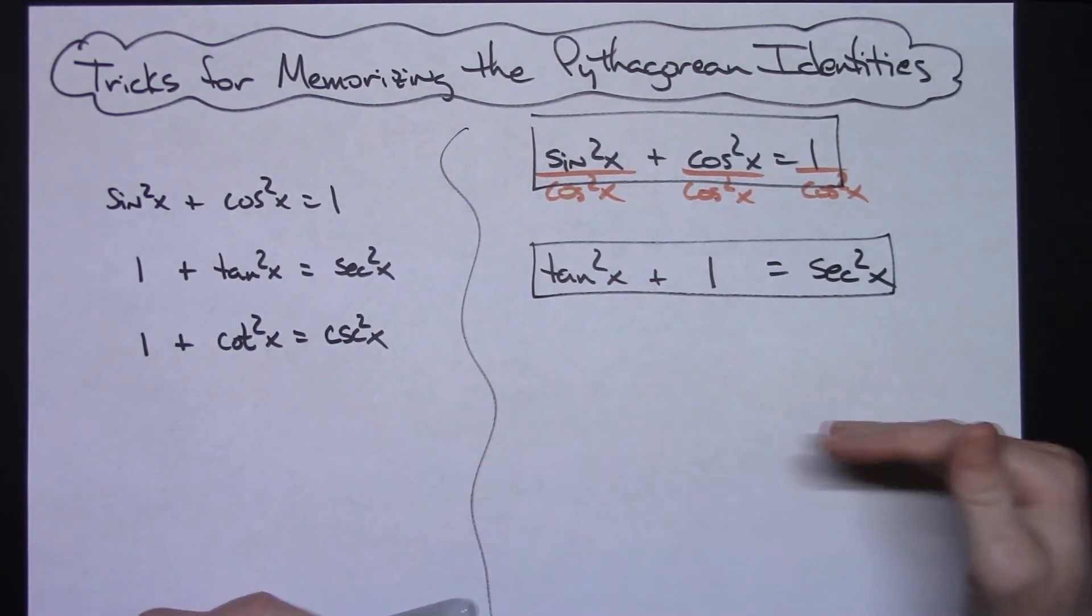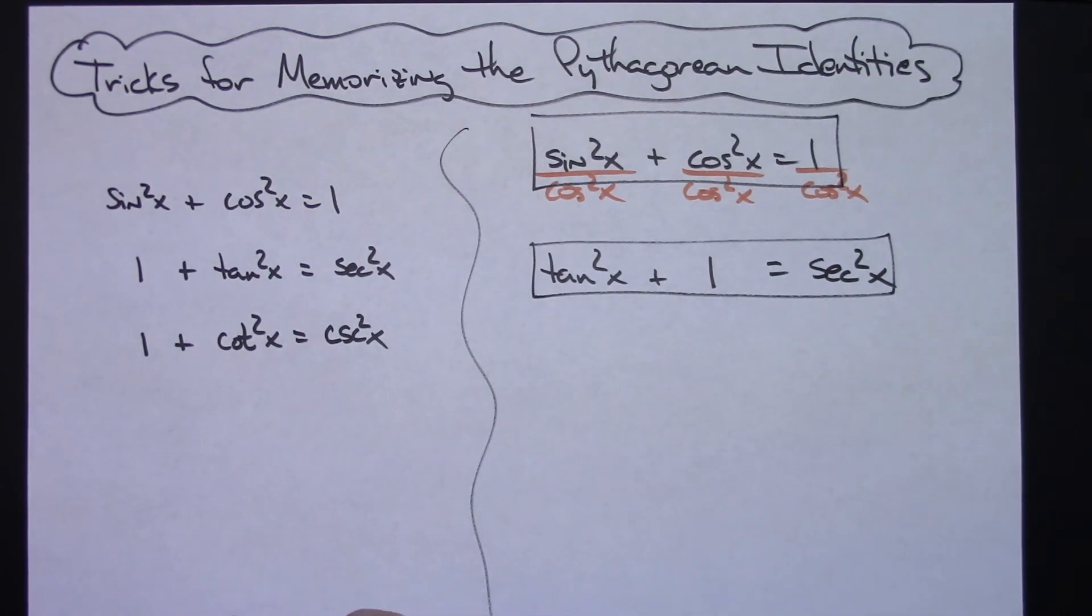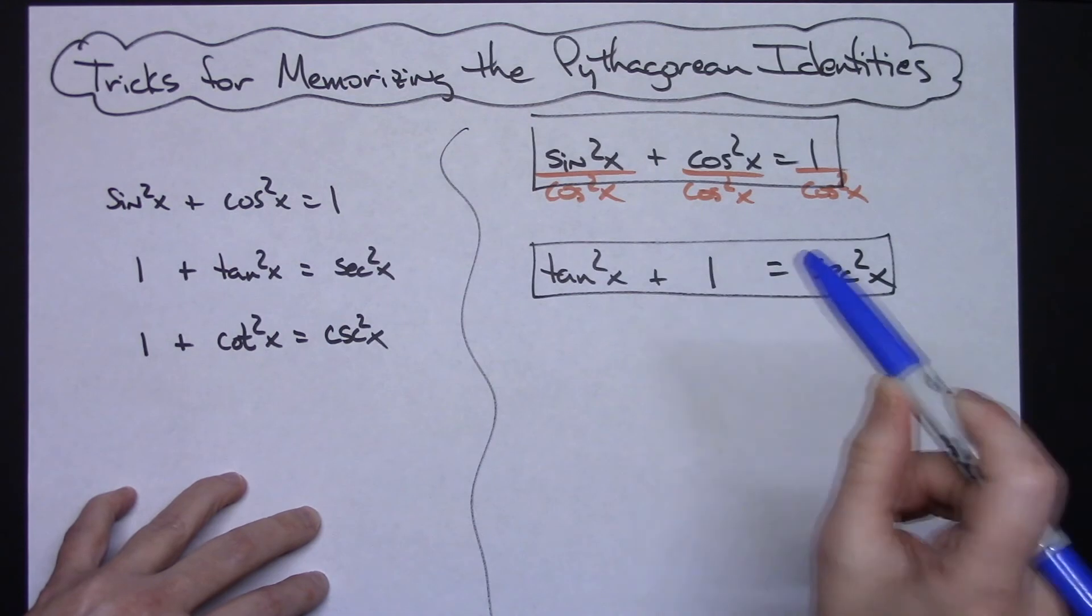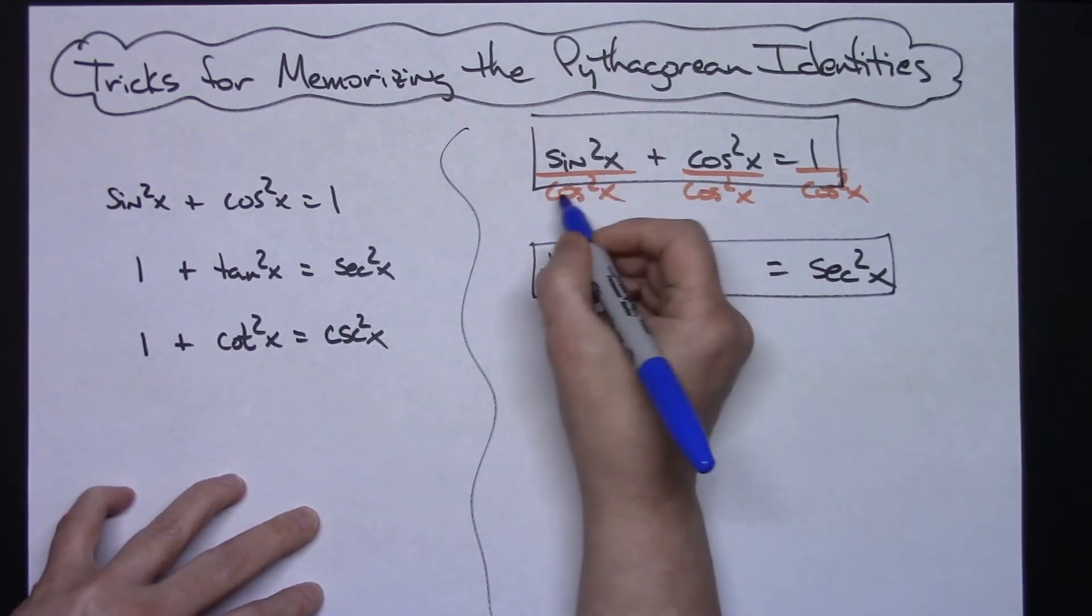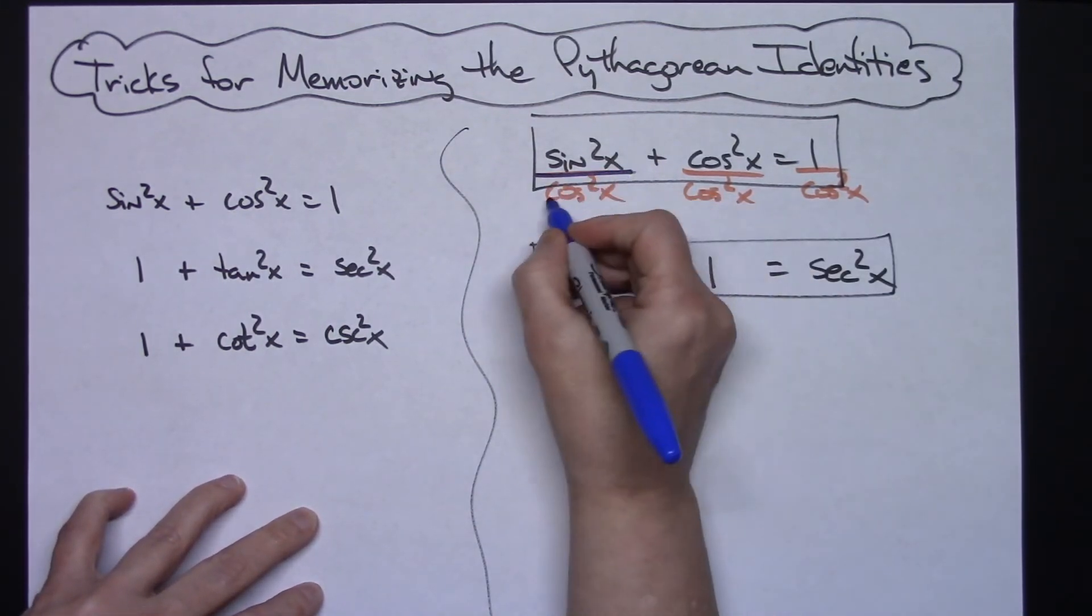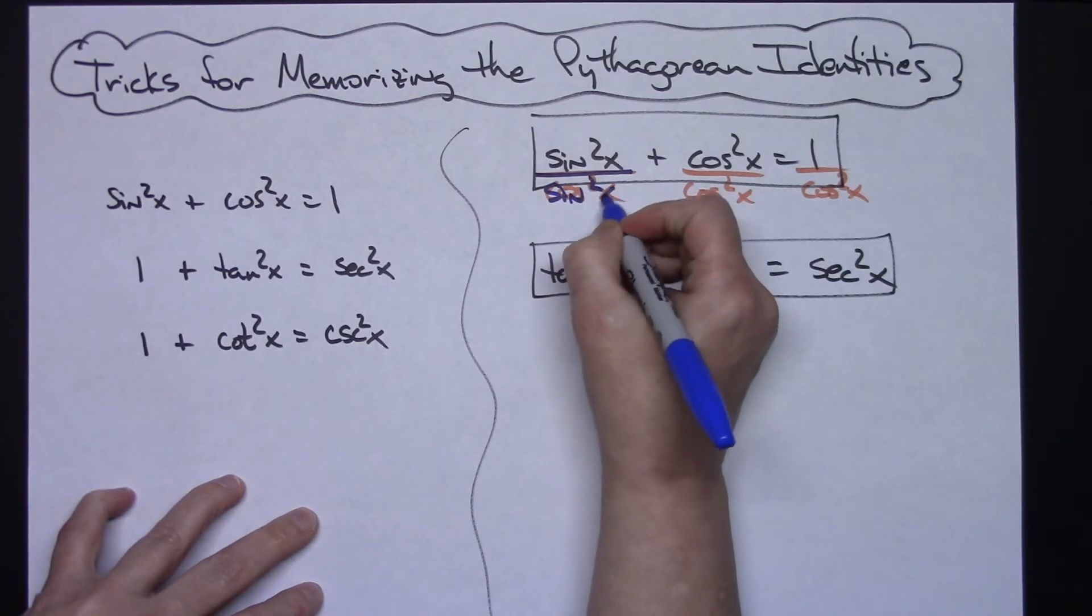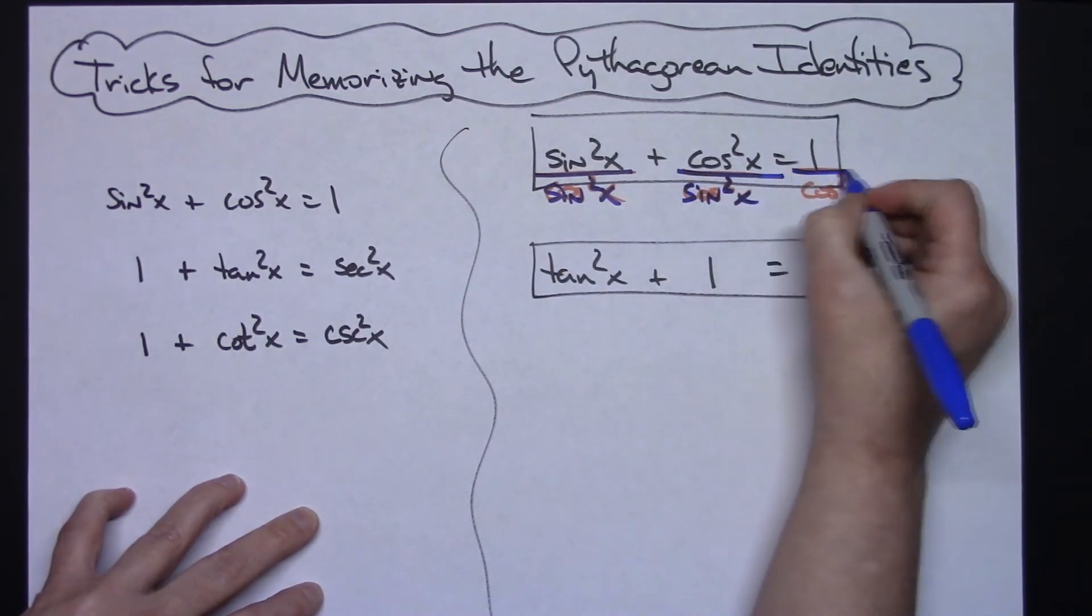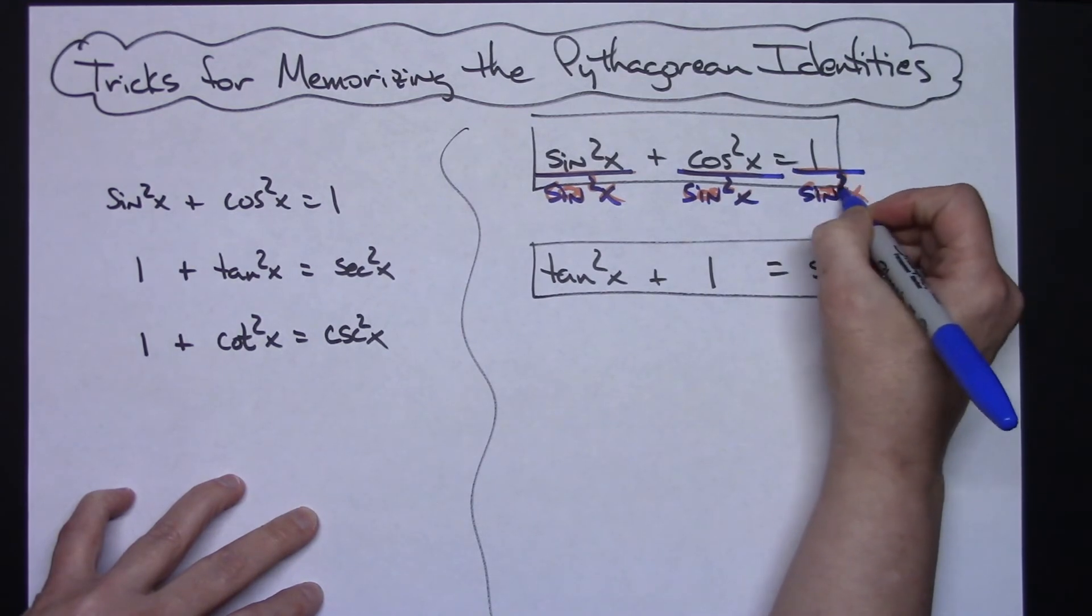All right, now the way you get the third row is instead of dividing through by cosine squared x, you divide through by sine squared x. So I'm just going to write right over that. So sine squared x divided by sine squared x and divided by sine squared x.